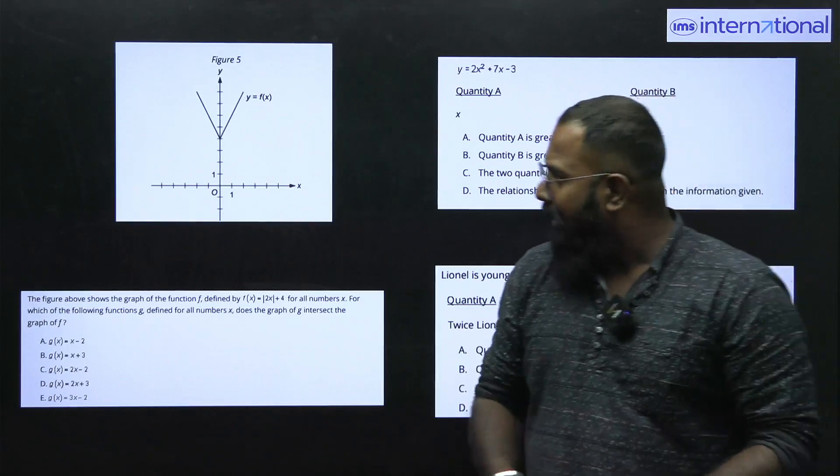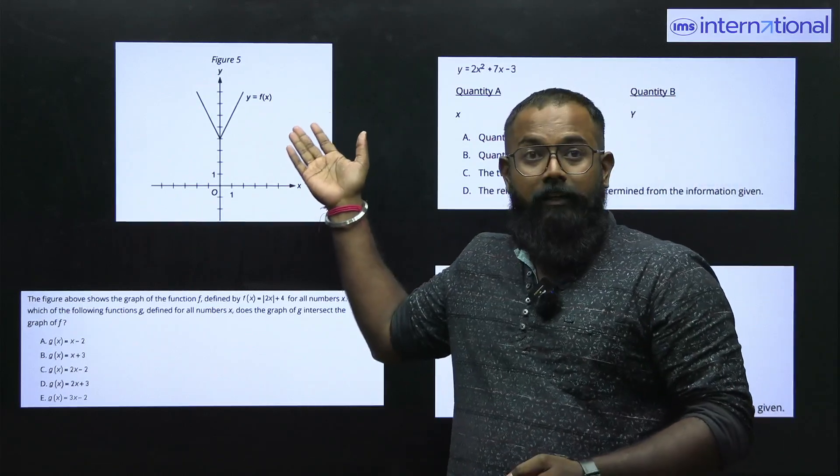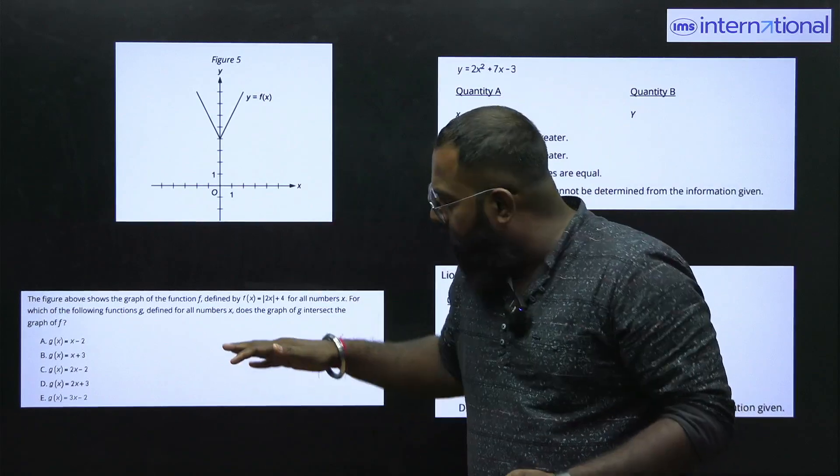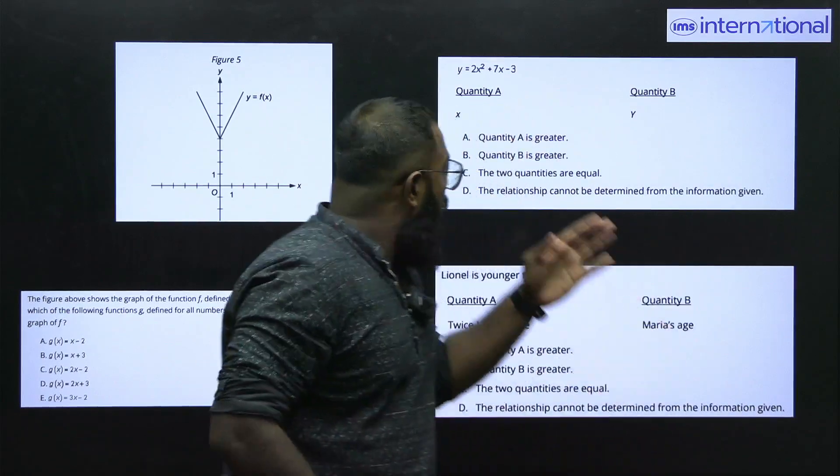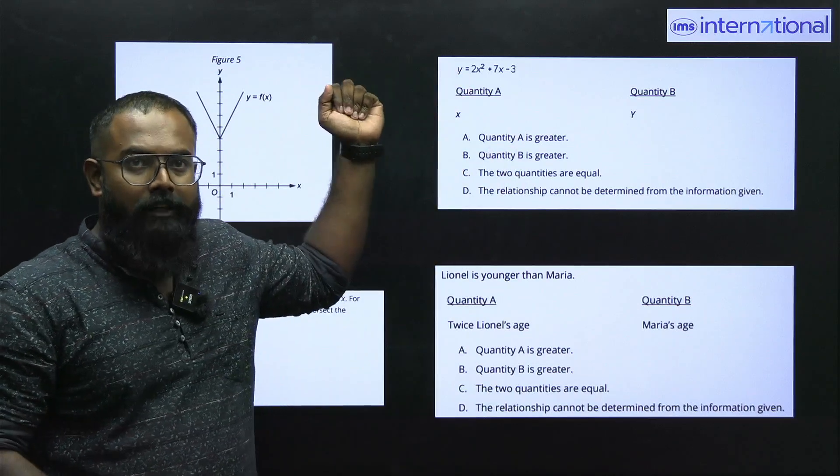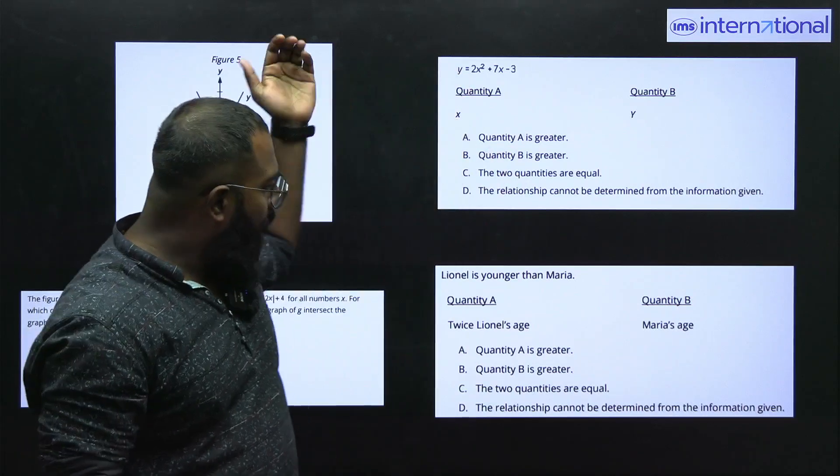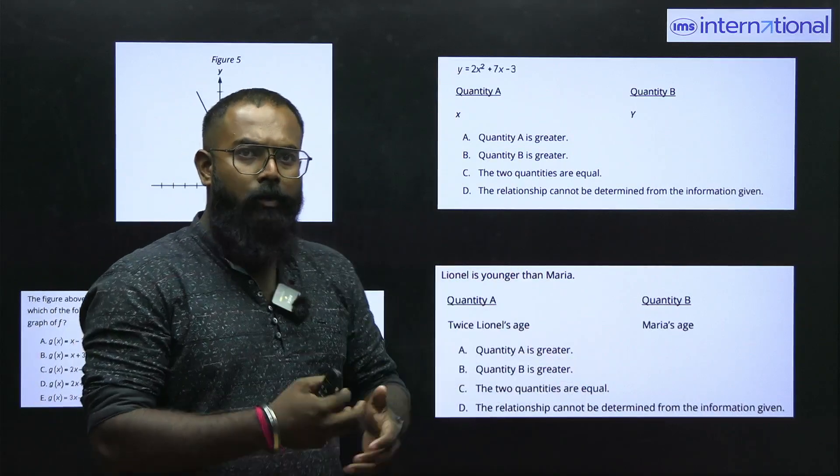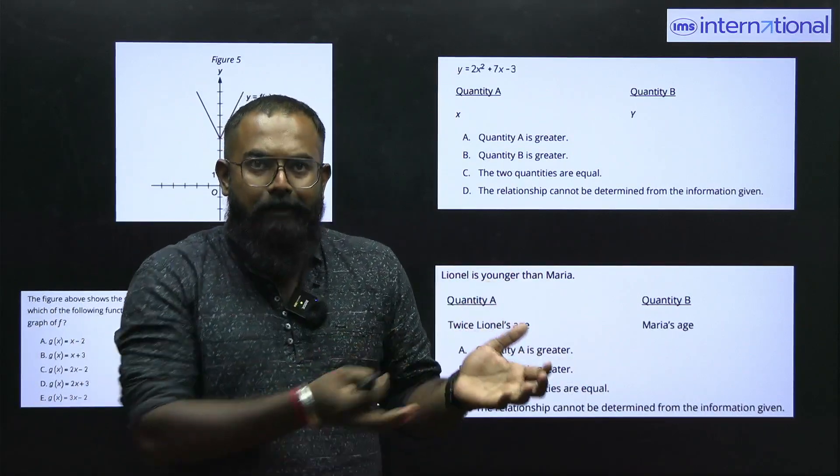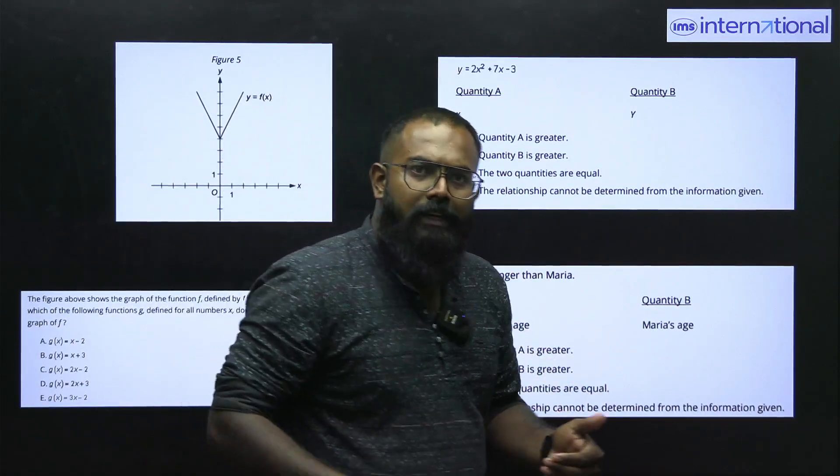You can see that there is a function that is given in front of you based on which you have been given a question. You can also expect a direct question. It is a quadratic question that is in front of you and then a word problem which you need to convert to a mathematical statement and then you need to solve it.